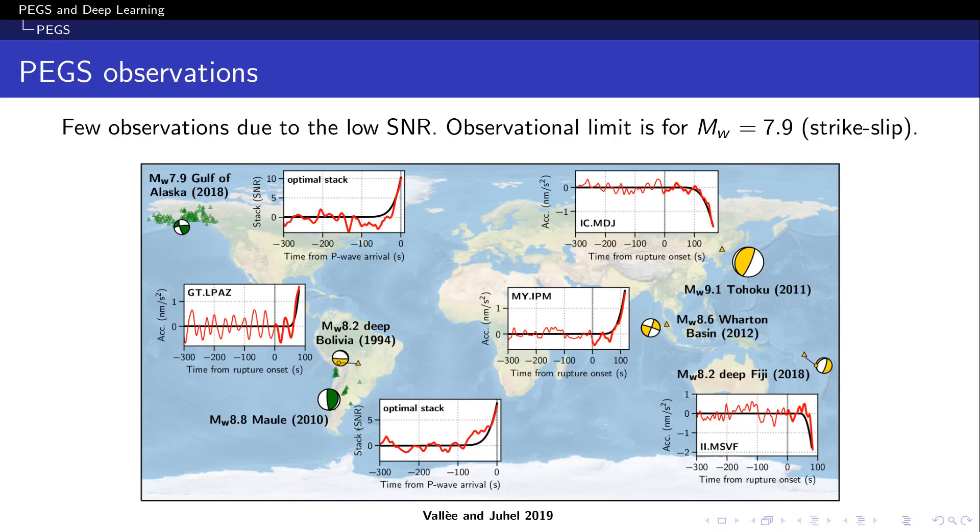What's interesting to notice as well here is that strike slip and deep slip events such as Wharton Basin and deep Bolivia earthquake show comparable peak PEGS amplitude with much higher magnitude but shallow dip slip events such as Tohoku. So this means that shallow dip slip events are not likely to be observed for similar and lower magnitudes unless some sort of stacking is performed as for the 8.8 Maule event which however makes application to real-time early warning systems difficult.